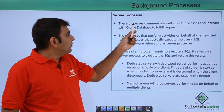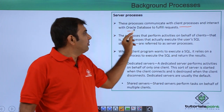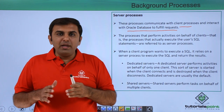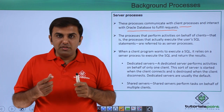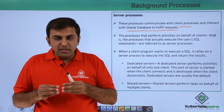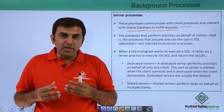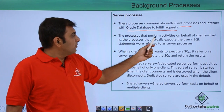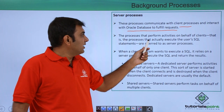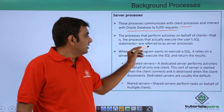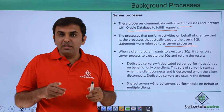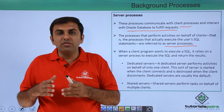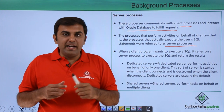Next is the server process. This process communicates with the client process and interacts with the Oracle database to fulfill the request. This is the main process — without it you cannot retrieve data. Once the server process is on the Oracle database server, it accepts the request from the client process — like the client asking for SELECT * FROM employee — and interacts with the database to fulfill the request. The server process is the process that actually executes the user's SQL statement on behalf of the client.